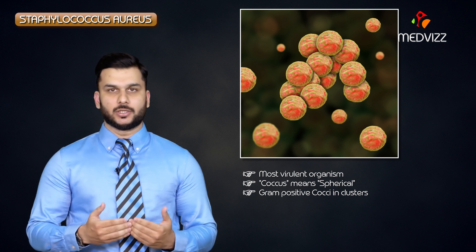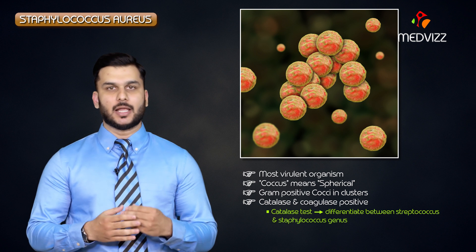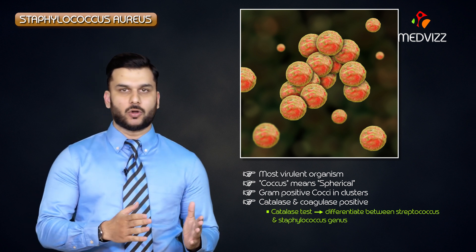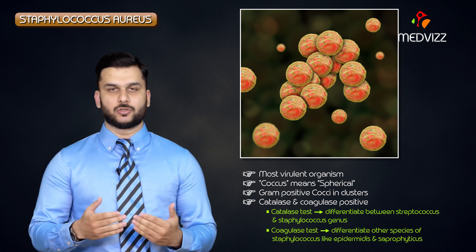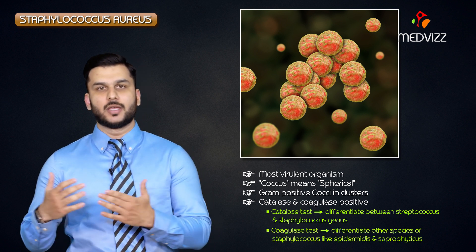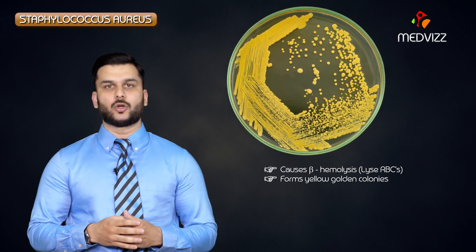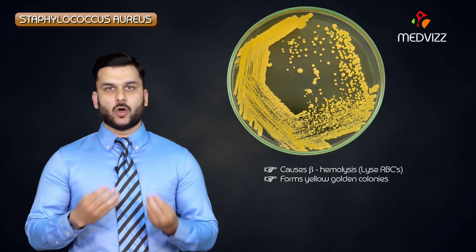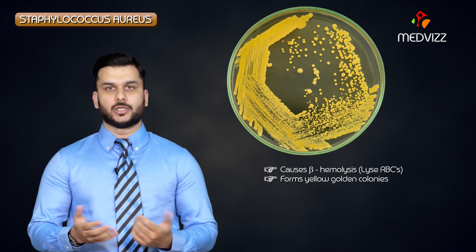Staph aureus is catalase-positive and coagulase-positive. The catalase property helps differentiate between the Streptococcus genus and the Staphylococcus genus, whereas the coagulase property helps differentiate other species of staph like epidermidis and saprophyticus. Staph aureus also shows beta-hemolysis, meaning it completely lyses RBCs, and it forms a golden-yellow colony — that's why it's called 'aureus.'